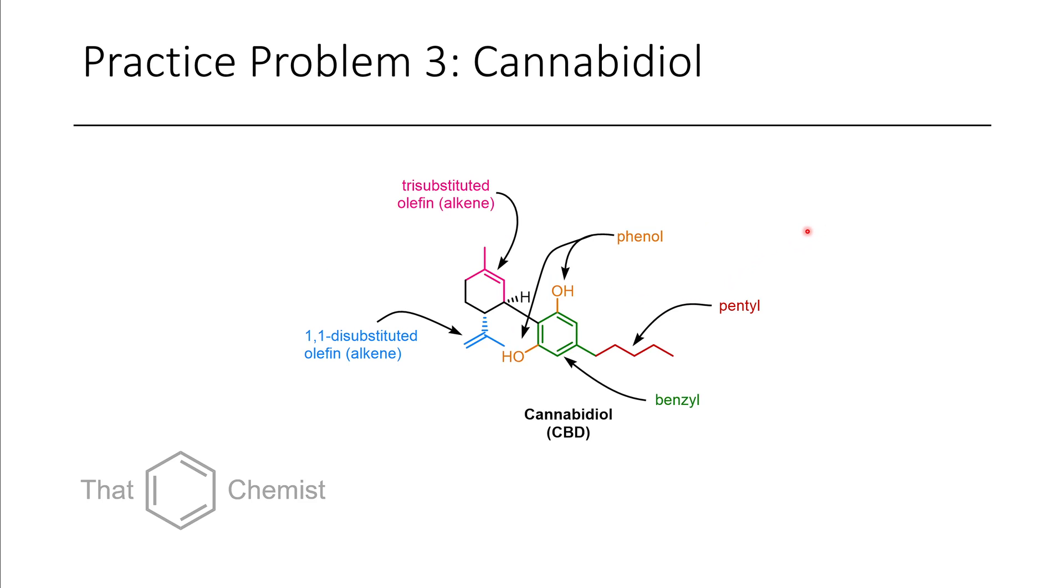Okay, so for the last example, here we have CBD. We have an N-pentyl group sticking off of the benzene ring in the para position. We'll get into nomenclature about benzene rings later. Meta to this pentyl group, we have a phenol group. We actually have another phenol group also on the other meta position. And then connected to this cyclohexene ring, we have an alkene, which is a tri-substituted alkene. It turns out that this is actually a Z-alkene, and this will be explained in a moment.